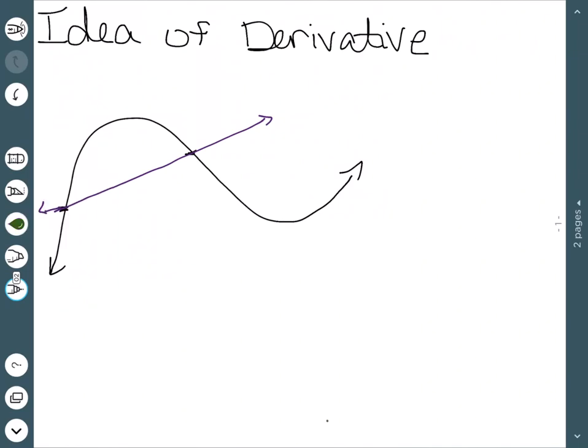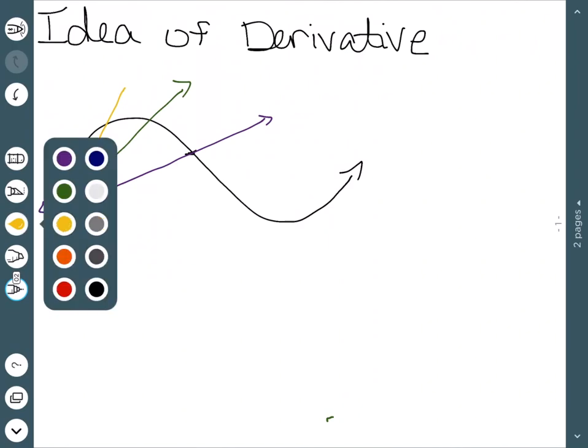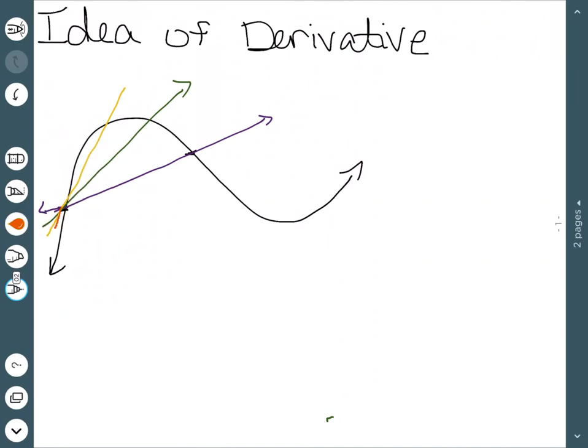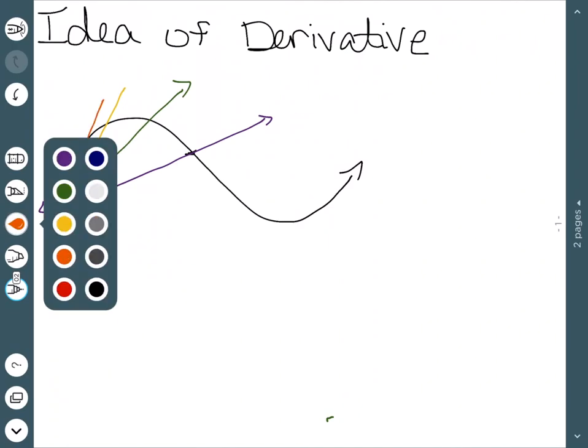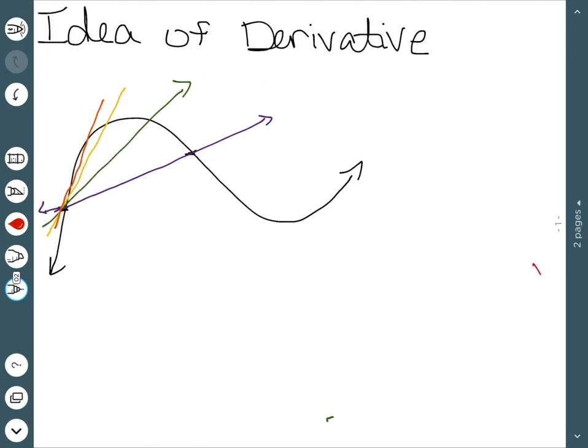So these are called secant lines, where it passes through two points on the graph. And we can take these secant lines, and the idea is that we want to get the two x-coordinates as close as possible until eventually we have a line that only touches the graph at this one point. And this is our tangent line. And the slope of that tangent line is going to be our derivative.